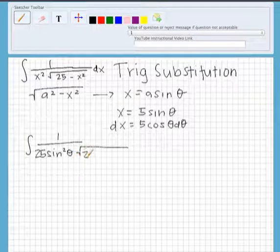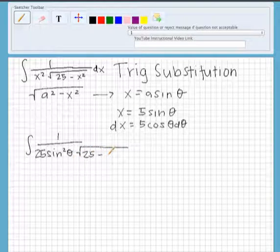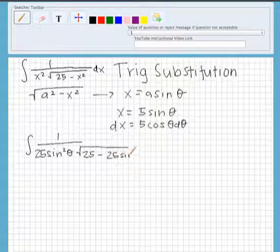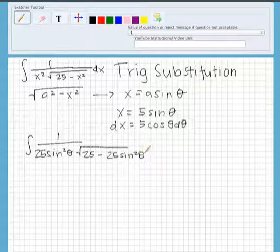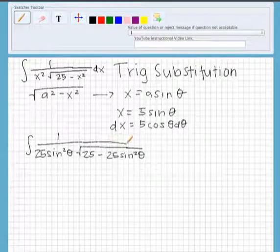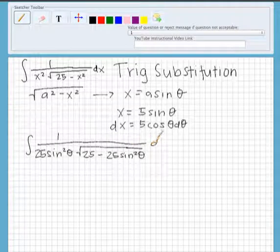Then we are going to do 25 minus 25 sine squared theta. Then we add on the d theta at the end.